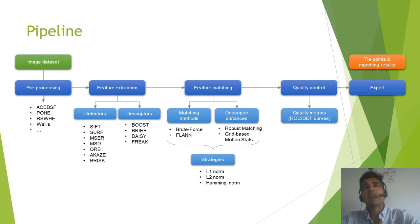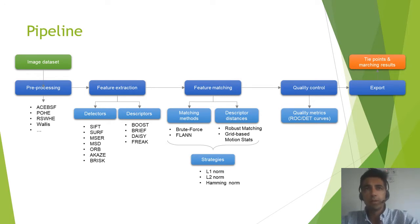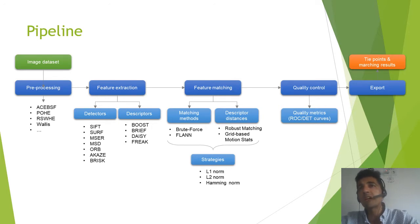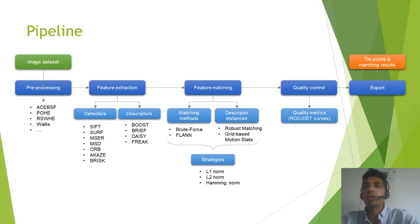In this slide we can see the pipeline of the Photomatch software. Starting with preprocessing algorithms combining different strategies for improving the input dataset, passing through feature extraction combining different detectors and descriptors, then feature matching combining matching methods with descriptor distance and different strategies, and last but not least, quality assessment based on quality metrics.